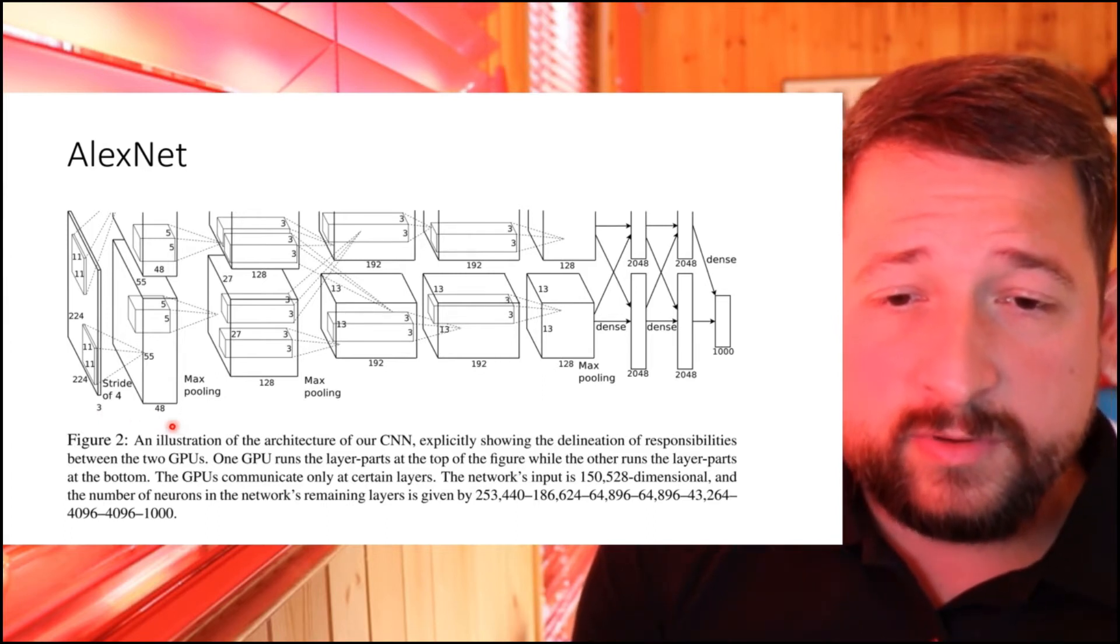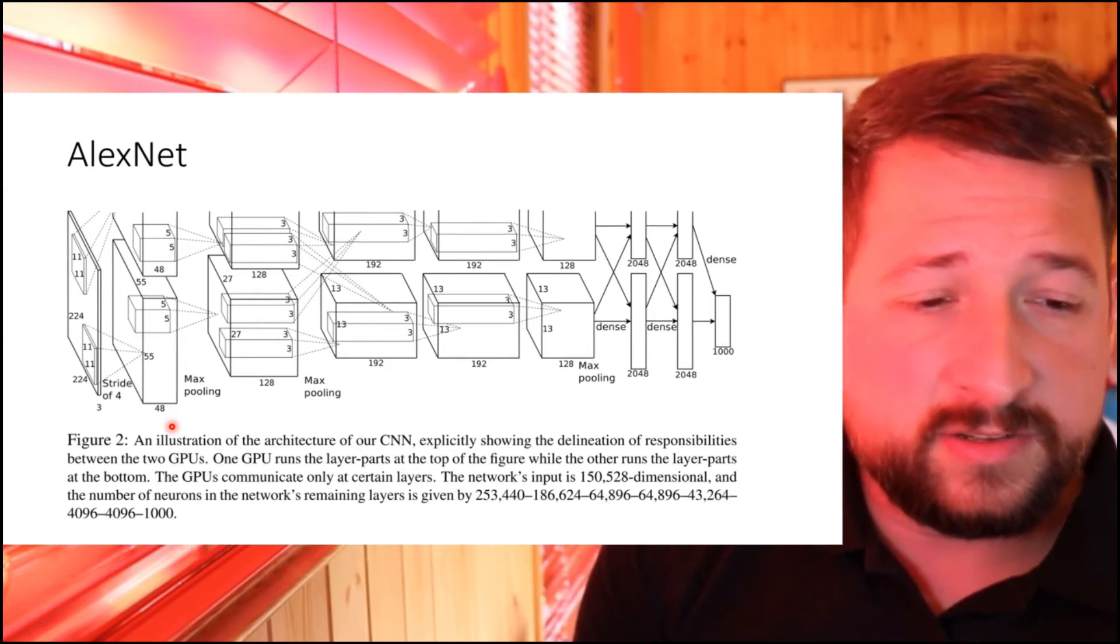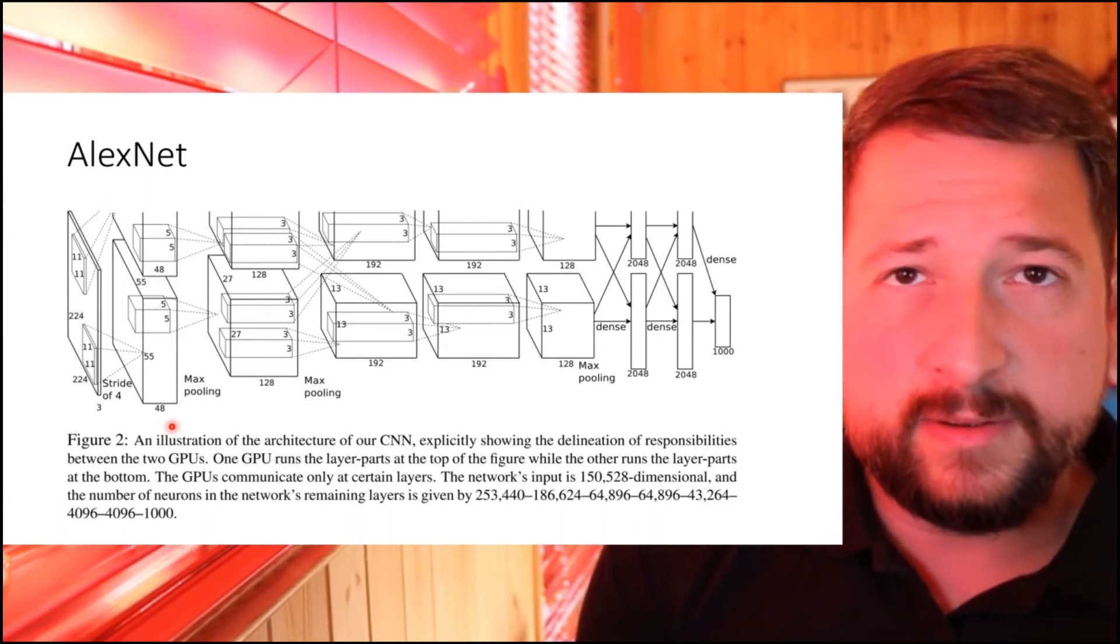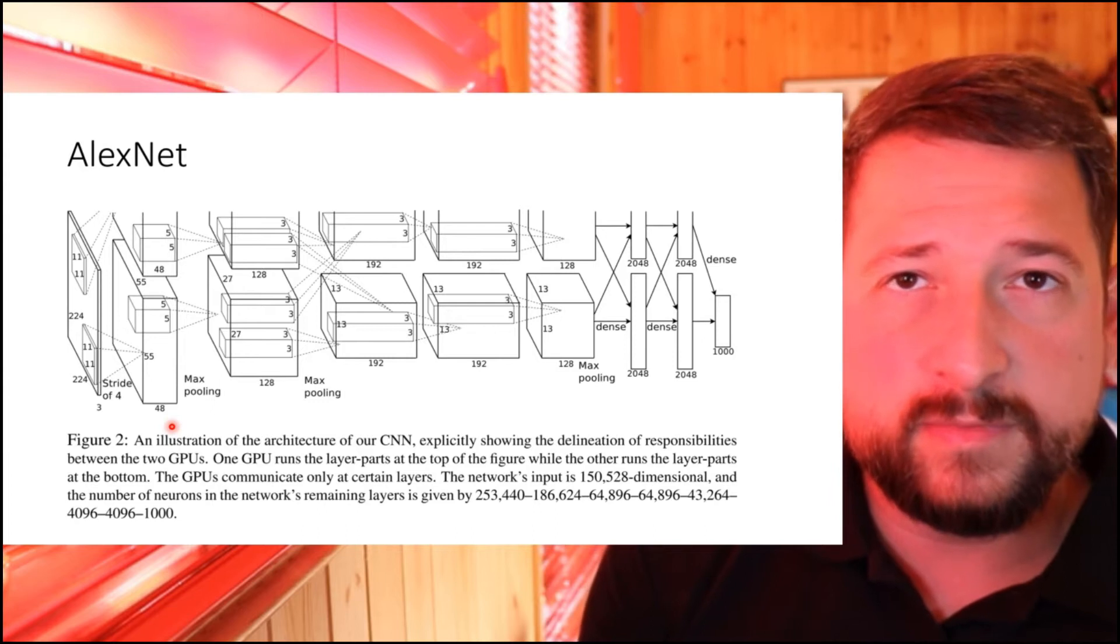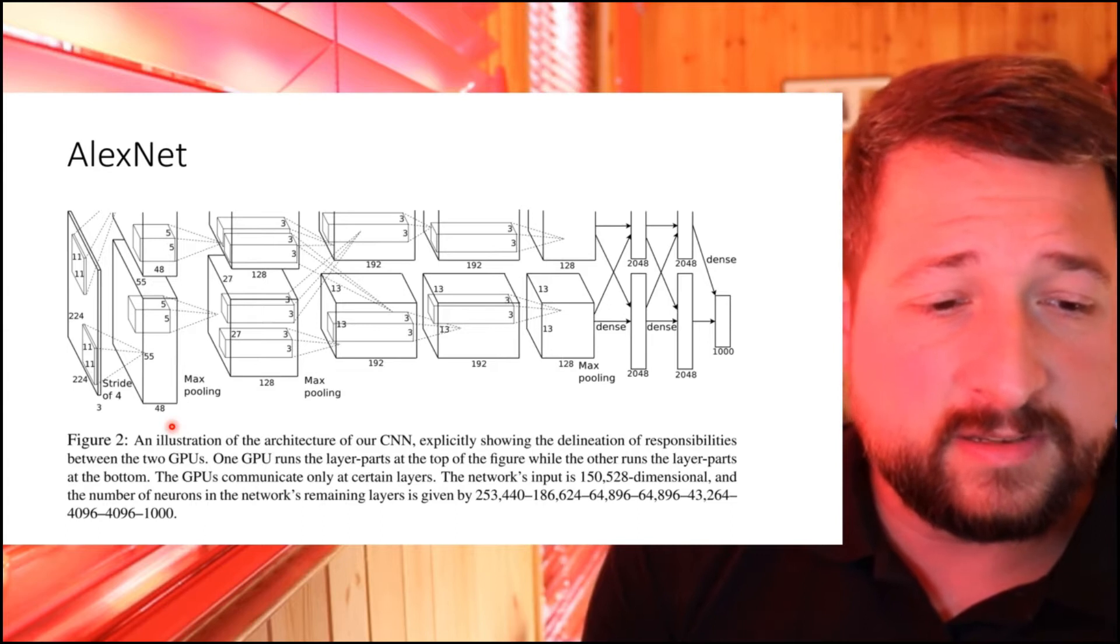In the convolutional layers it uses 11 by 11 filters at a stride of 4. Other people showed later that this is not really necessary and smaller filter kernels do their job as well. Back then this wasn't known yet, so 11 by 11 filters it were.